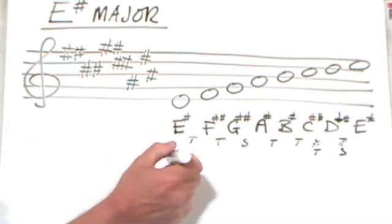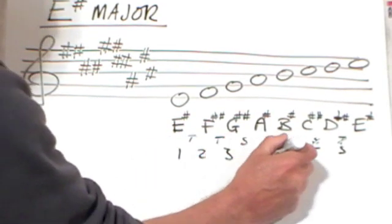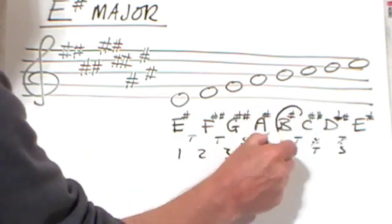But, we relentlessly keep the same process going. One, two, three, four, five, takes us to B sharp.